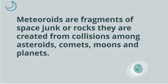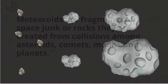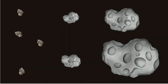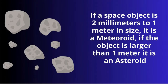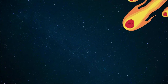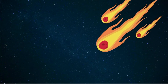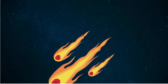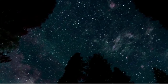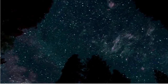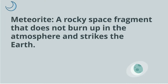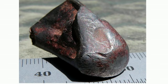A meteoroid consists of fragments of space junk or rocks created from collisions among asteroids, comets, moons, and even planets. Meteoroids are smaller than asteroids, ranging in size from grains of rice to objects up to a meter wide. A meteor is a meteoroid that passes through the Earth's atmosphere, heats up due to air resistance, and glows brightly. A space fragment that does not burn up in the atmosphere and strikes the Earth is called a meteorite.